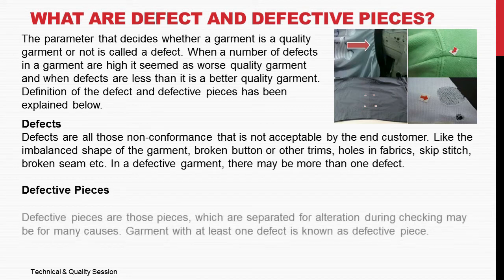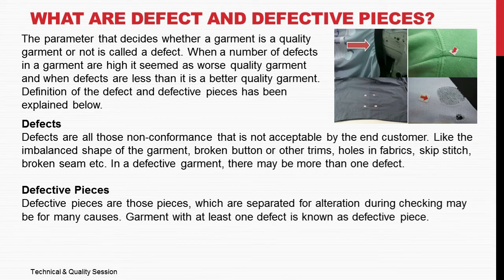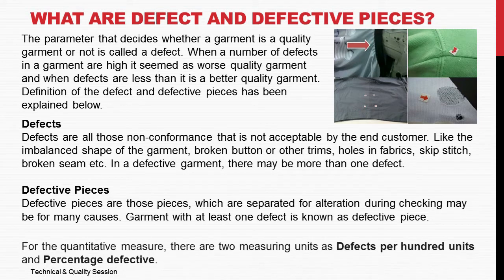Defective pieces are those pieces which are separated for alteration during checking, and may be so for many causes. A garment with at least one defect is known as a defective piece. For quantitative measurement, there are two measuring units: defects per 100 units and percentage defective.